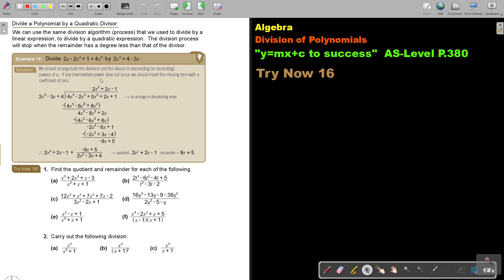If any intermediate power does not occur, so if there is a missing out, say it is 3, then 1, then we should insert the missing term with a coefficient of 0. And this is what is happening here. Because first you arrange, there is a 4, there is a 3, but there is not a 2. So you put a 0 for the 2. And there is the 1, and then there is the constant. And then you divide.